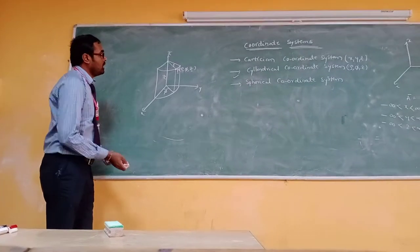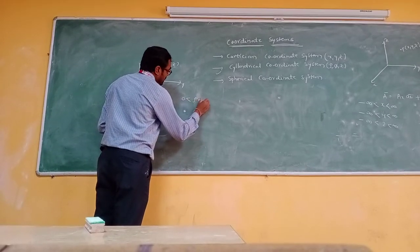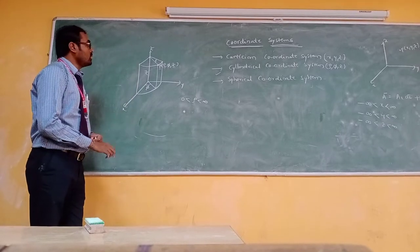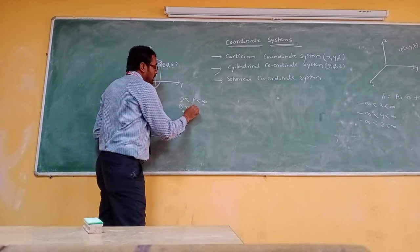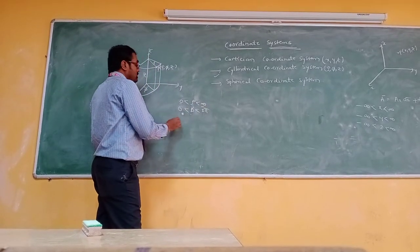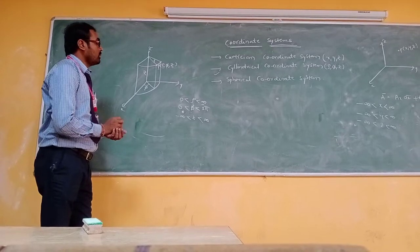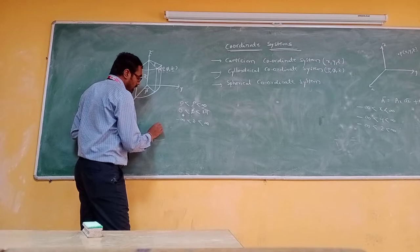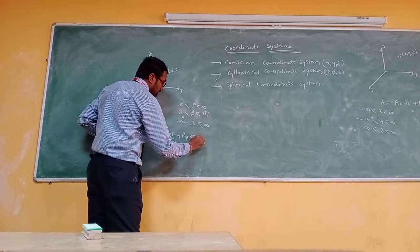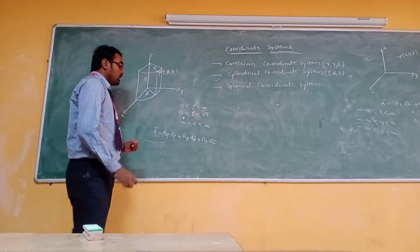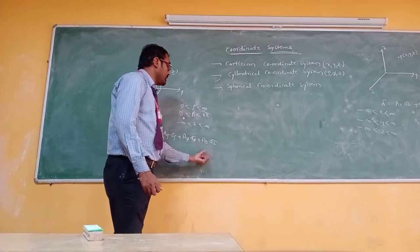The limits of the cylindrical coordinate system components are: rho, the radius from the z-axis to the surface of the cylinder, has limits from 0 to infinity; the azimuthal angle phi has limits from 0 to 2π; and the z-axis component has limits from minus infinity to plus infinity. The vector representation in the cylindrical coordinate system is A-bar equal to A-rho times A-rho-bar plus A-phi times A-phi-bar plus Az times Az-bar.